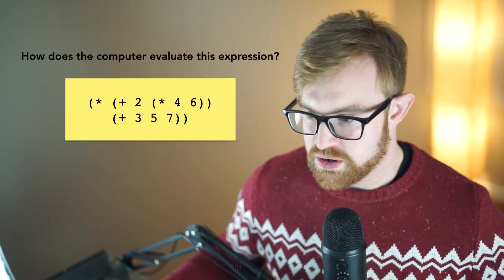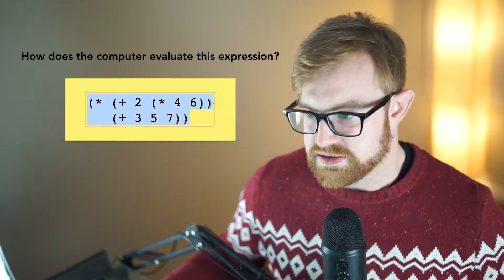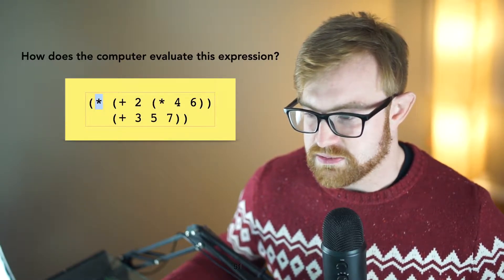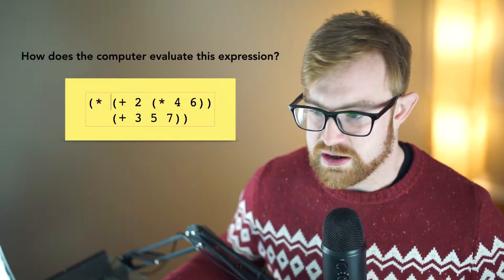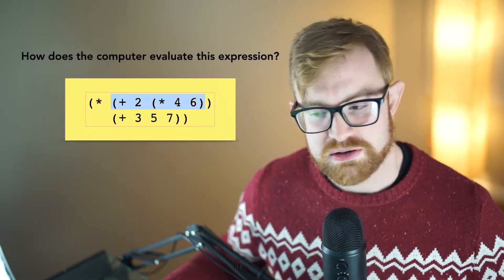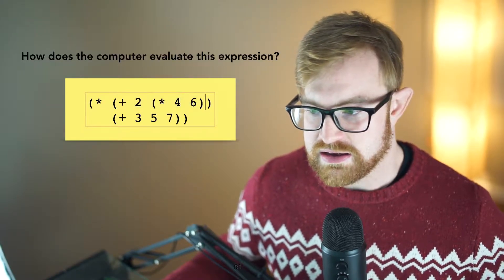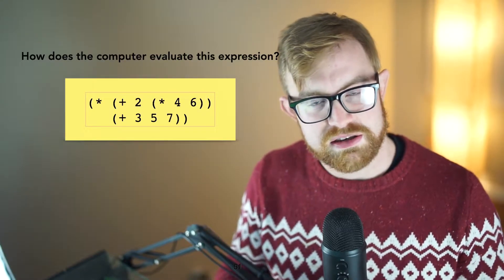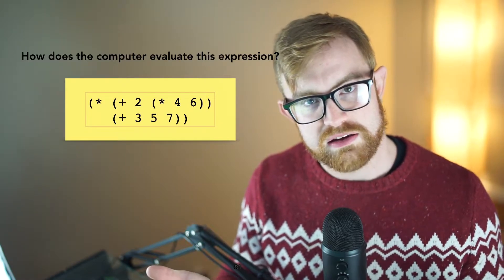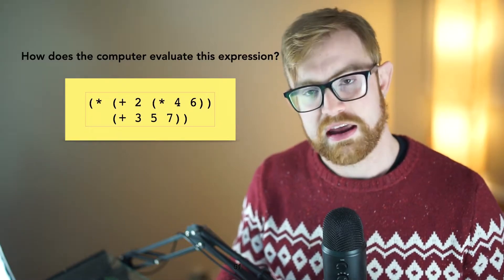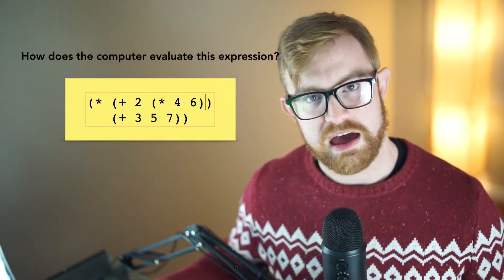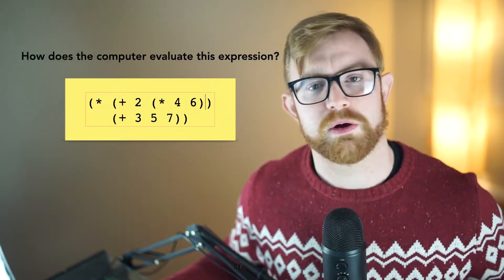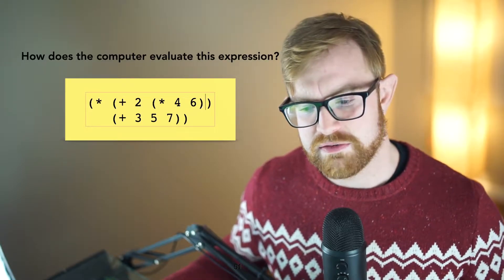The key point behind this example is that we've got a computation of times and we've got various sub-expressions. In general, there would be no limit to the depth of sub-expressions we could write, and so the computer kind of has to account for that. So how do traditional programming languages account for this?